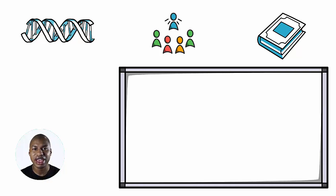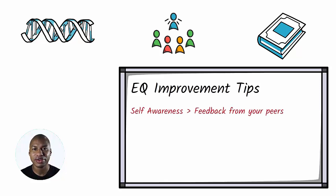Here are some easily actionable tips to improve your EQ. To improve your self-awareness, ask for feedback from your peers. To improve your self-management, make reflections on the last time you were overburdened. If you felt bad, try something different next time to overcome the bad feelings.